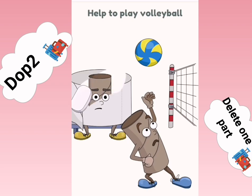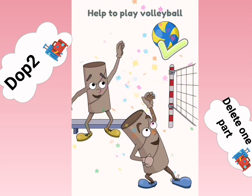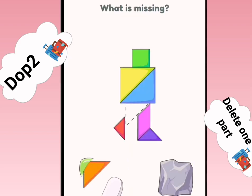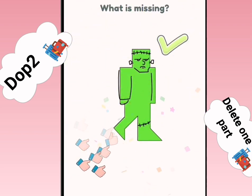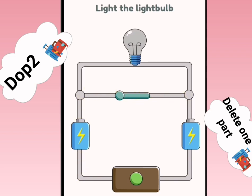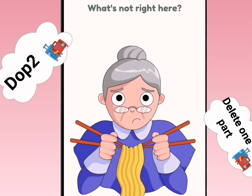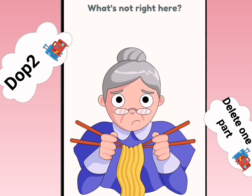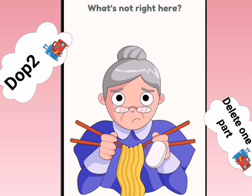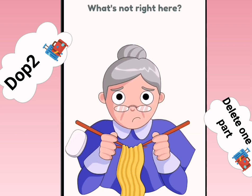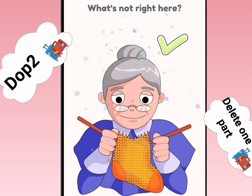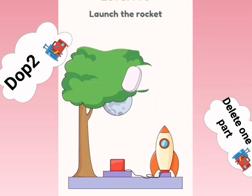Help to play volleyball. What is missing? Light a light bulb. What's not right here? Launch the rocket.